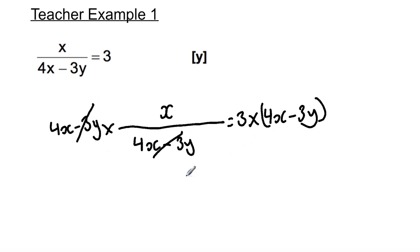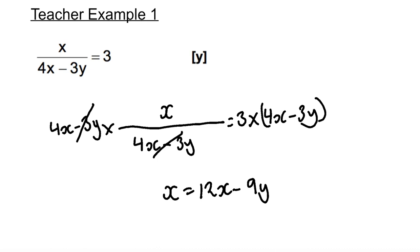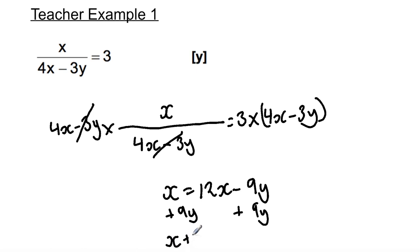I'm going to expand this bracket. So what we're left with is x is equal to 12x minus 9y. Now I'm going to add 9y to both sides — minus 9y plus 9y equals 0 — so we have x plus 9y equals 12x.